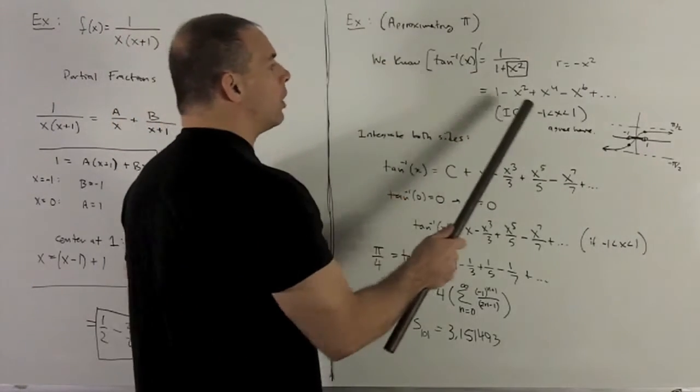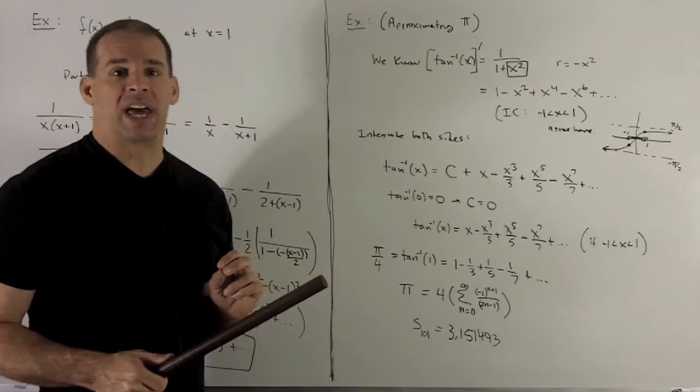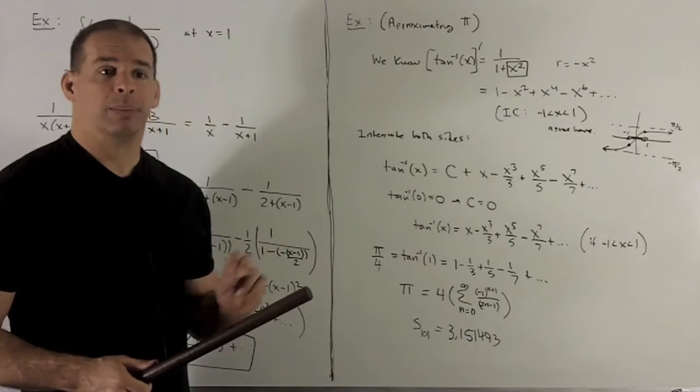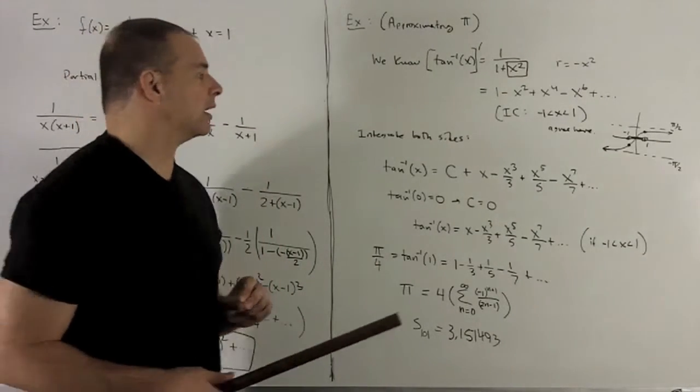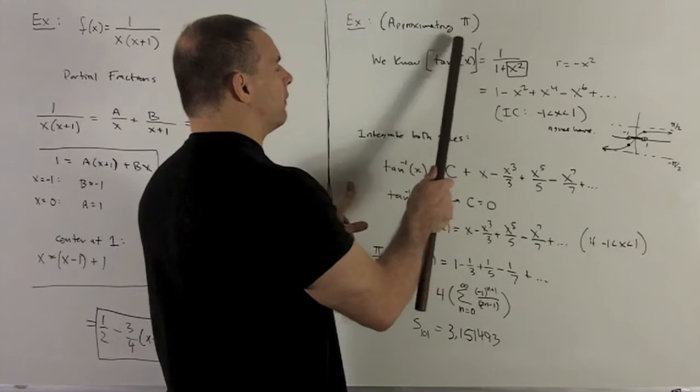Okay, these are equal. I'm going to take the antiderivative of both sides, and then we'll see what comes out. They'll both be equal on the other side. So taking the antiderivative of a derivative, they cancel, leaving me with tan inverse of x.